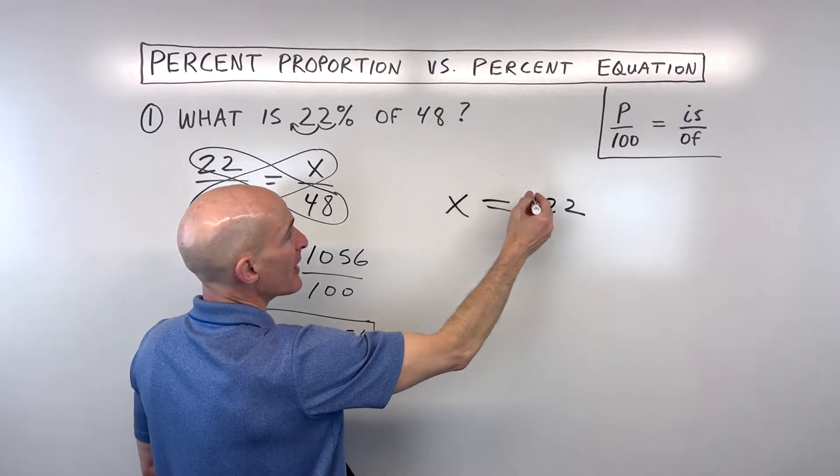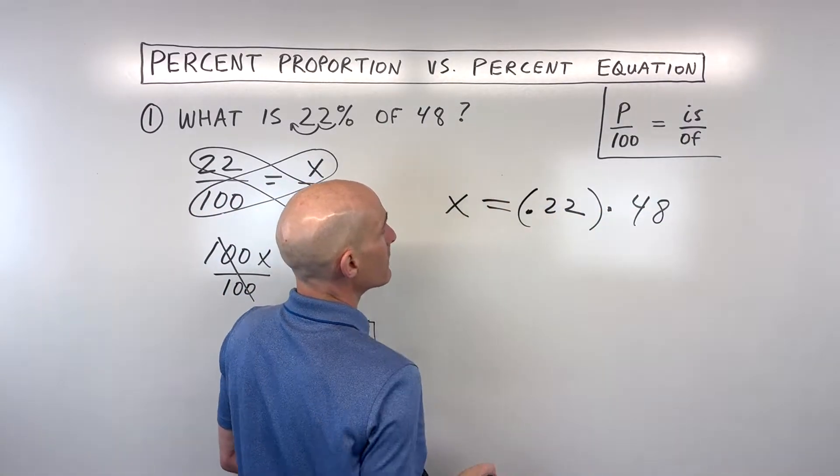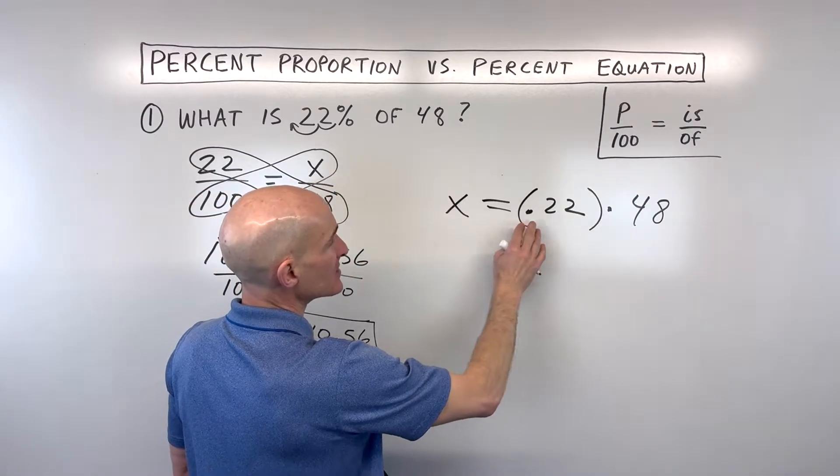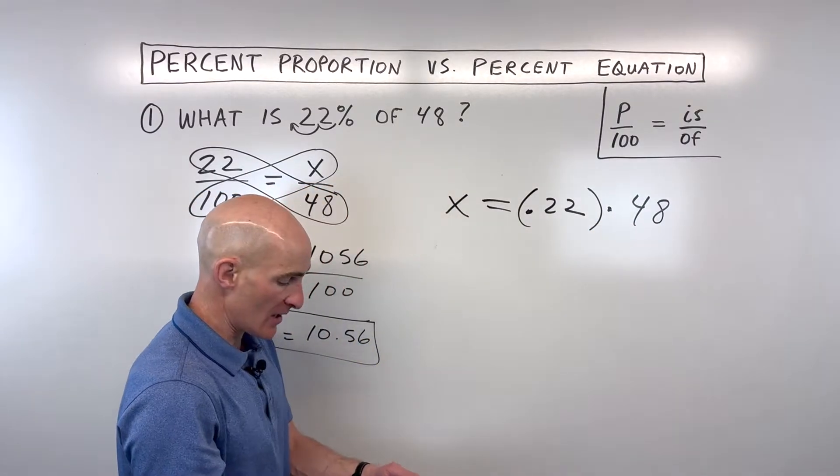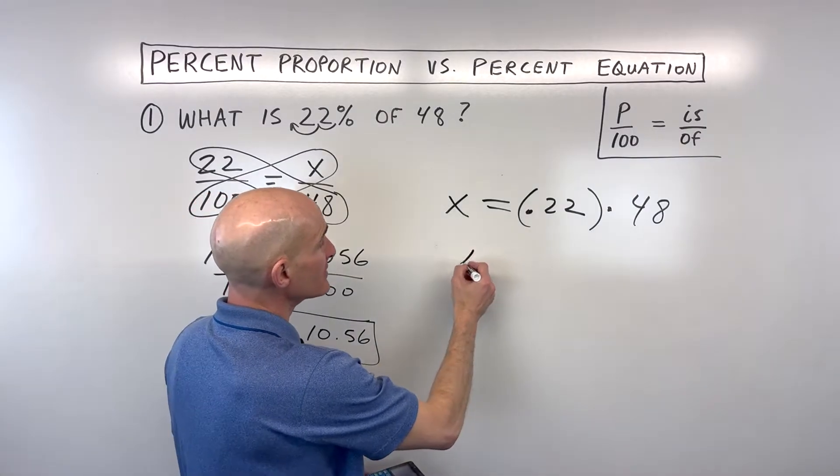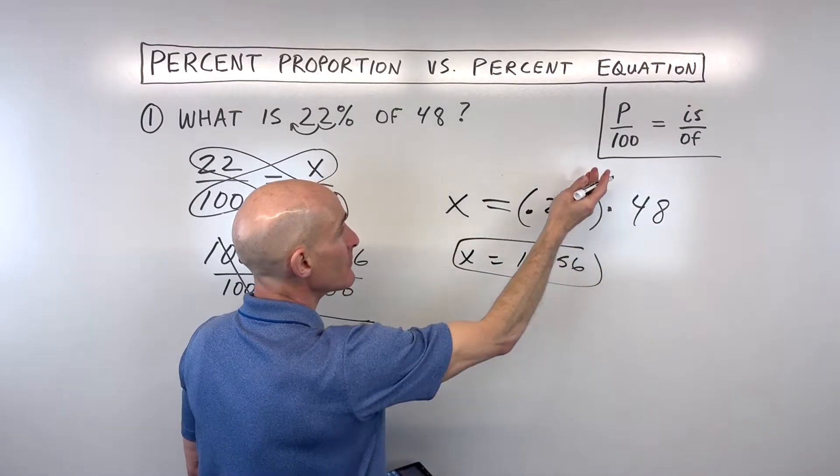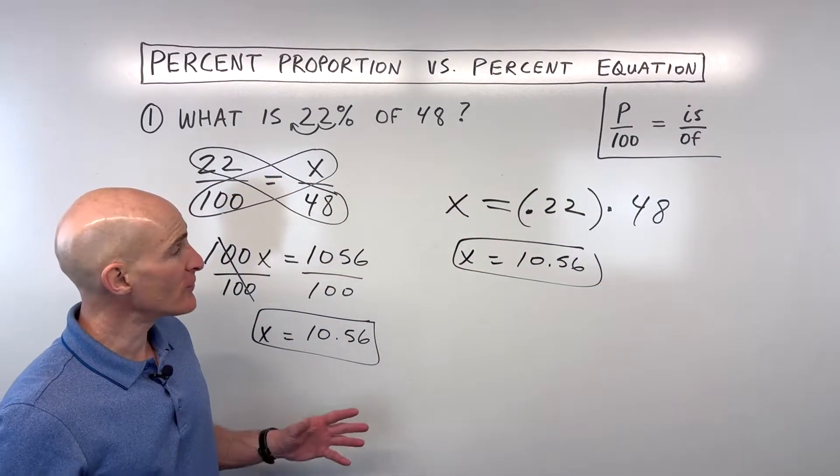'Of', when you see the word 'of', that means times. So times 48. Now we have x is 0.22 times 48. Let's do that on the calculator, and that comes out to 10.56, the exact same thing we got using the proportion method. So two different techniques. Let's try another example.